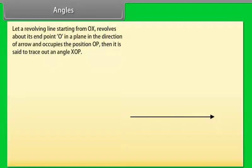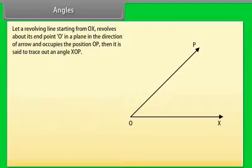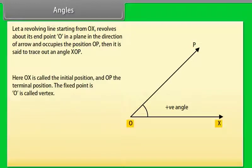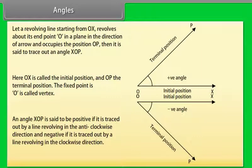What are angles? Let a revolving line starting from OX revolve about its end point O in a plane in the direction of the arrow and occupy the position OP. Then it is said to trace out angle XOP. Here OX is called the initial position and OP the terminal position. The fixed point O is called the vertex. Angle XOP is positive if traced in the anticlockwise direction and negative if traced in the clockwise direction.